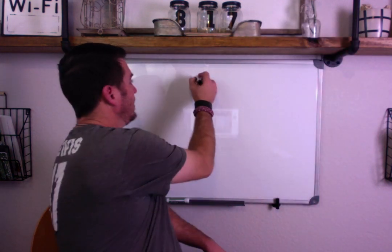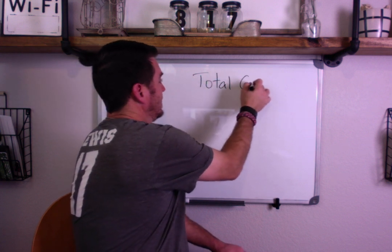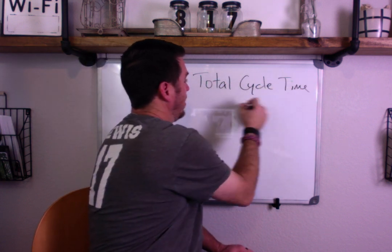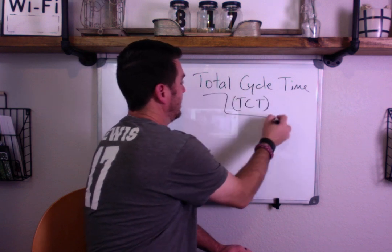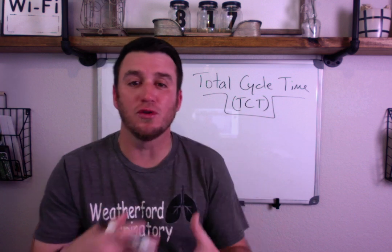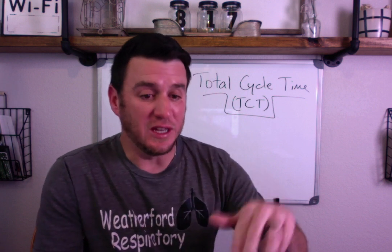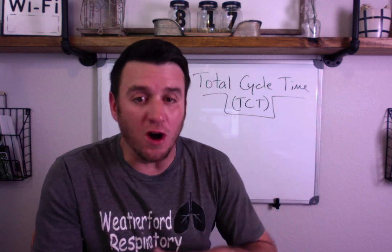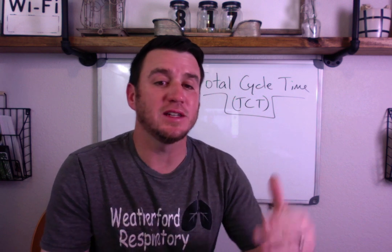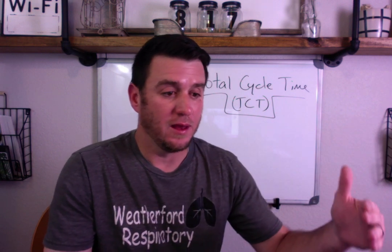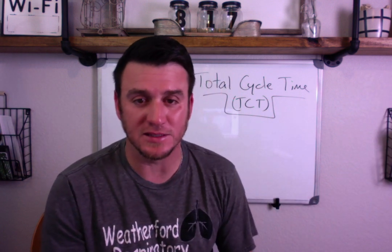What's up FRT community? We've got a question coming to us from Ashant Bala and she wants to know what is meant by total cycle time and how do we calculate it? So here we go — we're talking total cycle time, also known as TCT. Total cycle time is the time that it takes to give a breath, or for all of inspiration to happen, plus all of exhalation before the next inspiratory period begins. That's total cycle time.